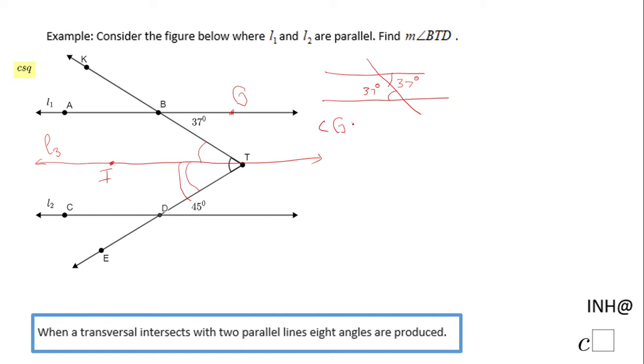Angle GBT is congruent to angle FTB because they are alternate interior, and that means the measure of angle GBT is equal to the measure of angle FTB, which allows me to find the measure of angle FTB as being, as I said, 37 degrees.